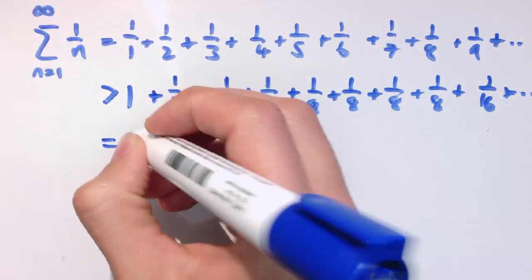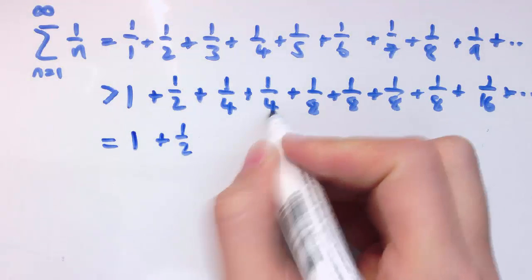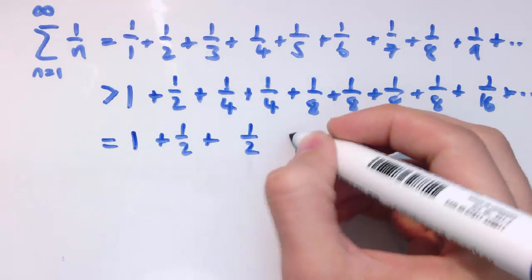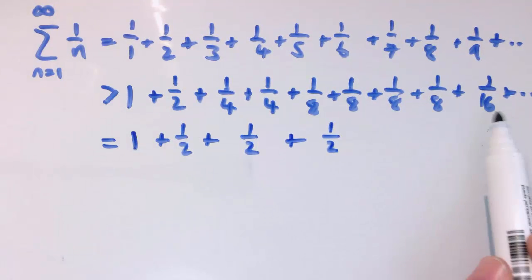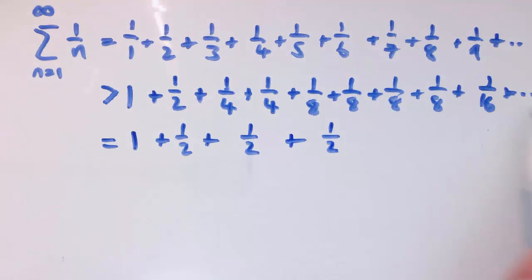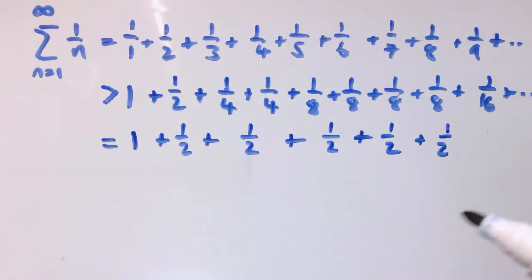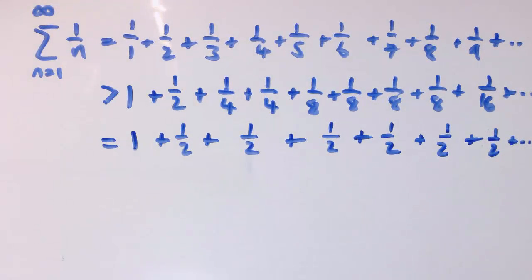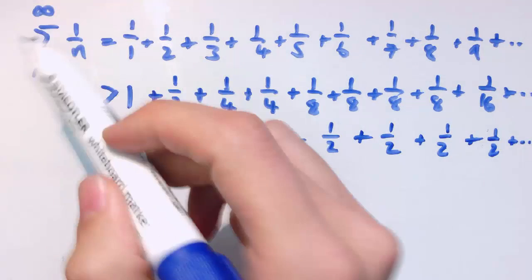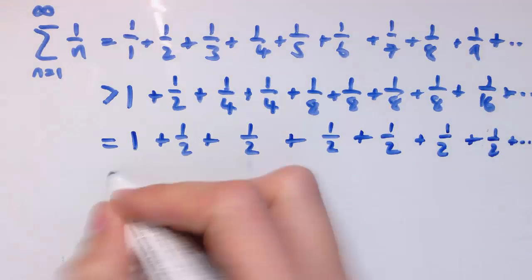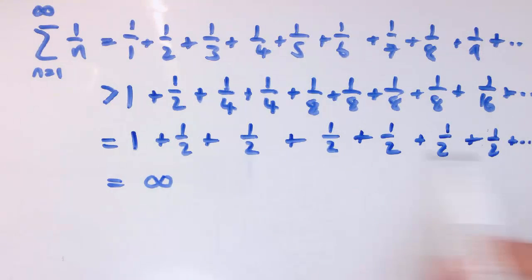What we notice is: I've got 1, then a half, then a quarter plus a quarter — that's a half. An eighth plus an eighth plus an eighth plus an eighth — four of those — that's also a half. For the sixteenths, I'd have eight of them, all numbers from nine to sixteen, and eight lots of one sixteenth is again one half. Then sixteen lots of one thirty-second is another half, and thirty-two lots of one sixty-fourth is another half. Although it takes longer and longer to gather enough fractions to reach a half, if I keep going far enough — and I can go as far as I like because I'm going to infinity — I always get above the next value. So this actually equals infinity: I've got infinitely many halves.